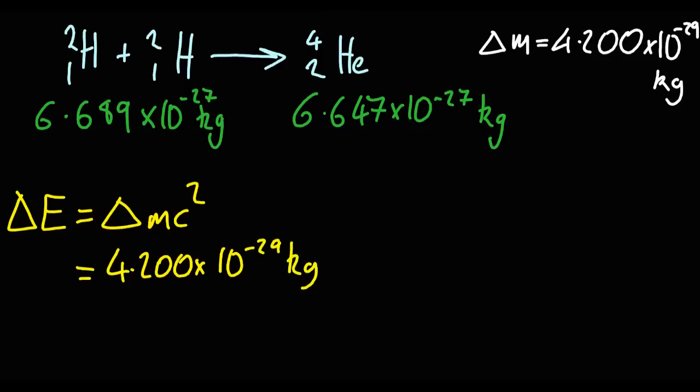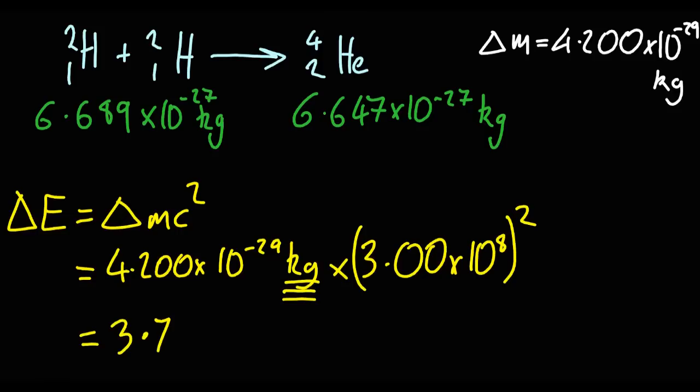Putting in the mass change, it has to be in kilograms. This is physics now. Multiplied by the speed of light squared, that's going to be a heck of a big number. So even a small mass is going to give out relatively more energy than you expect. It's 3.78 times 10 to the minus 12 joules. And that's to make just one helium atom from those two hydrogen isotopes.